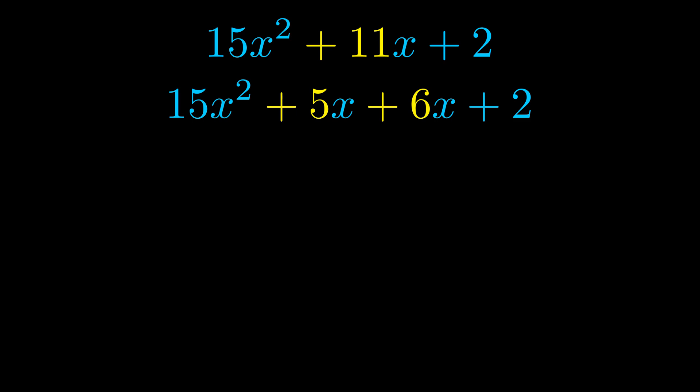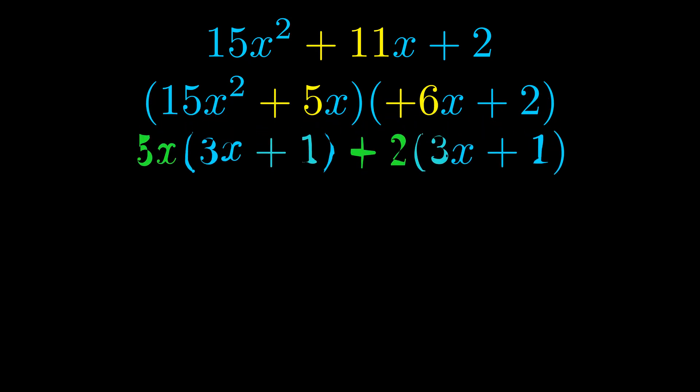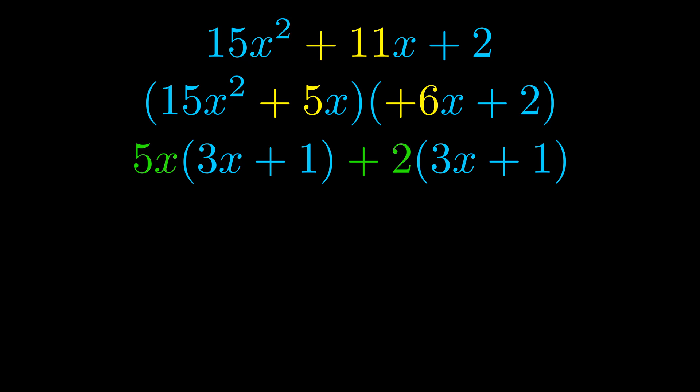Once we've done this we go ahead and we put parentheses around the first term and the last term. And we do that so that we can take the greatest common factor out of both terms. We can see the greatest common factor is now outside in green. Notice also how what remains inside of the parentheses is the same in both cases.